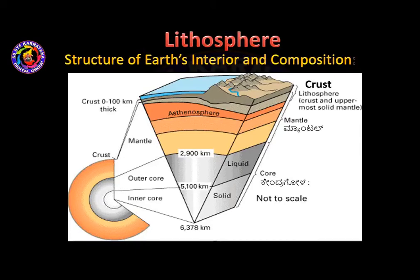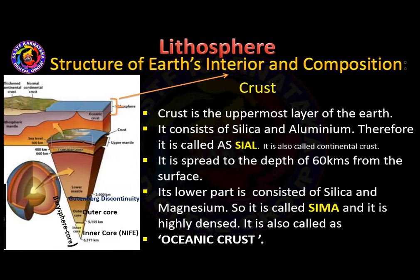Assalamu alaikum students, welcome back to Global Public School online classes. In our previous class we studied about the lithosphere meaning and how the structure forms. In this class we are going to talk about the different composition of the Earth: crust, mantle, and core. The crust is the uppermost layer of the Earth, and the topmost layer is formed with silica and aluminium, that is why it is called SIAL.